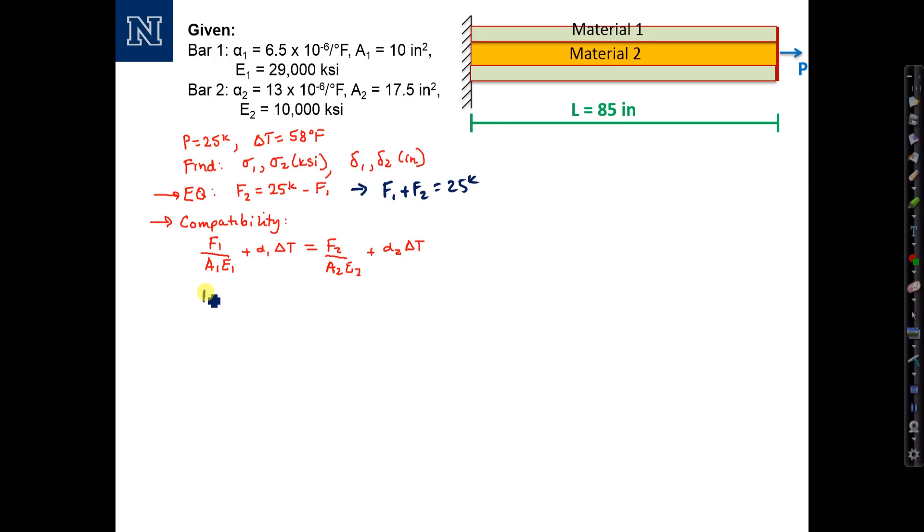The second equation we would write as bringing both F1 and F2 to the left-hand side: F1 over A1E1 minus F2 over A2E2 equals (alpha2 minus alpha1) times delta T. So we can work with these two equations to set up our matrix system of equations.